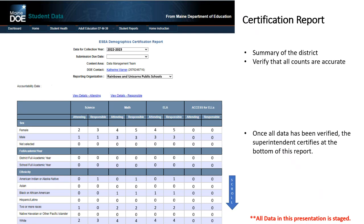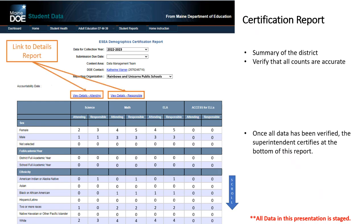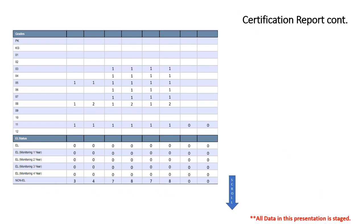This is your view of the certification report. You have various demographics for your students — it's just important to make sure all your counts are correct. These are for students who are eligible for taking the assessment, so we have science, math, ELA, and ACCESS for ELLs. Just verify that everything looks good. You'll be able to navigate to the details reports for your attending students and your responsible students right here on the certification report. We also have more sections of demographics — grade levels. This is only for students who are assessing, so you may not see counts for all grade levels, as grades pre-K, kindergarten, 1, and 2 are not required to assess.